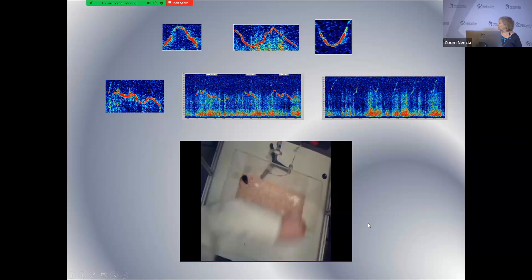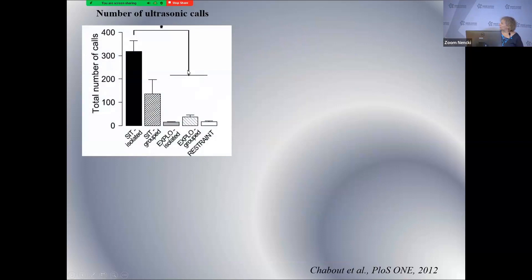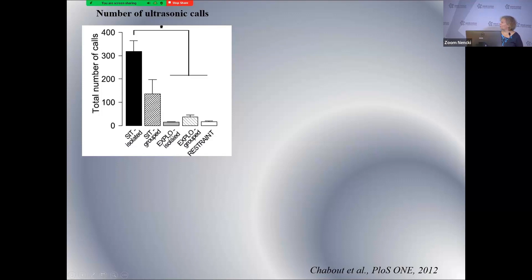What we recorded here is the number of ultrasonic vocalizations in this social interaction paradigm. The black bars represent vocalizations when one of the two animals had been socially isolated before the task, while in the other condition no animals were isolated — the same social interaction task otherwise. The number of vocalizations is dramatically different. Other conditions shown include animals alone exploring novelty, or in restraint stress, but I will talk about those later.